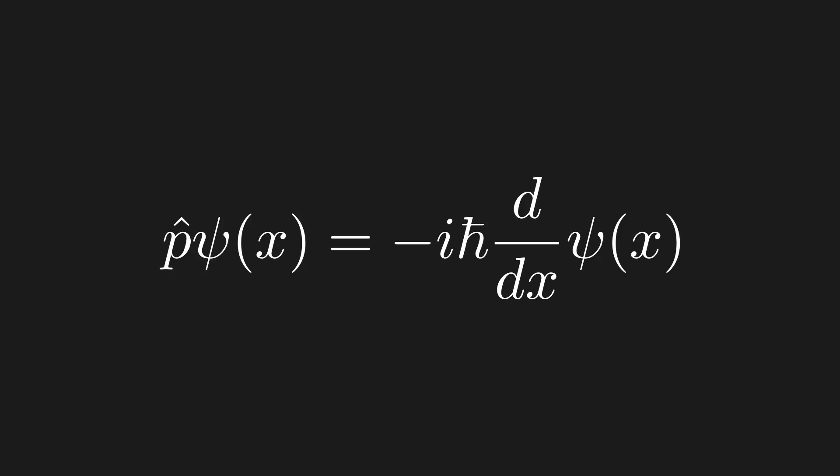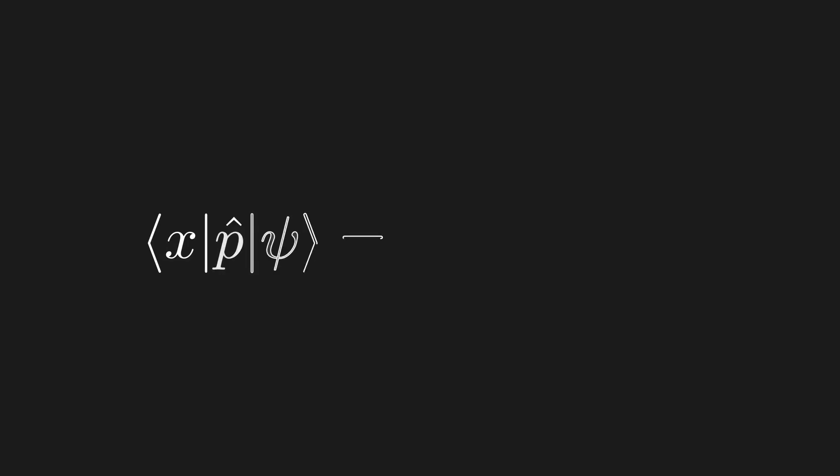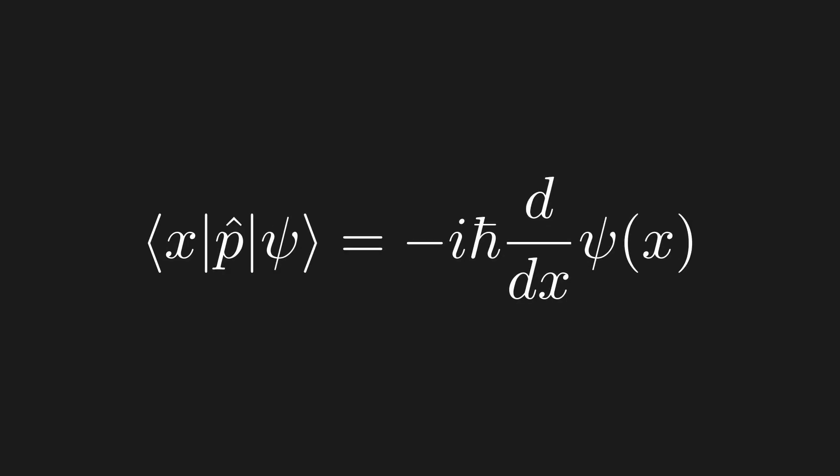Quick note: sometimes you see expressions where the momentum operator seems to act directly on a scalar wave function — this is technically an abuse of notation, since operators act on kets, not scalar wave functions. The correct expression is that when you act the momentum operator on your state and then project onto the position basis with the position bra, you get the right-hand side. More simply, the action of the momentum operator in the position basis is −iħ times the derivative. This keeps all of our bra-ket formalism consistent.